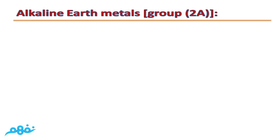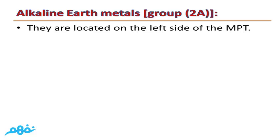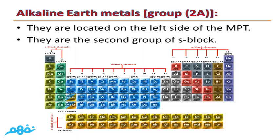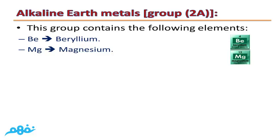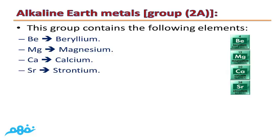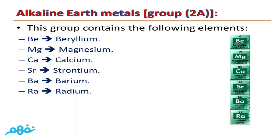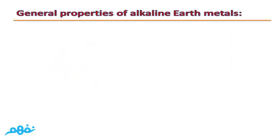Let's talk about the second group, Group 2A, which is called alkaline earth metals. They are located on the left side of the modern periodic table and are the second group of the S block. We won't talk about Ra (radium) because it is radioactive or unstable.